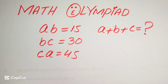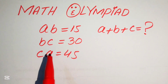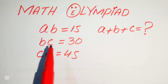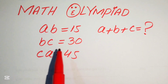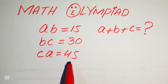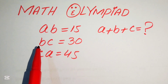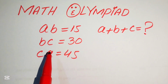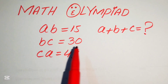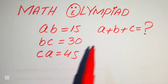Hello everyone, welcome. Let's solve this algebra problem. We have ab equals 15, bc equals 30, and ca equals 45. We need to find the values of a, b, and c, and after that we need to find the value of a plus b plus c.